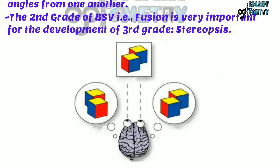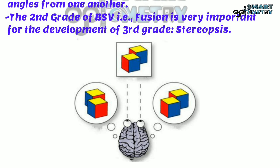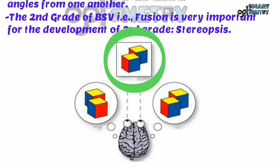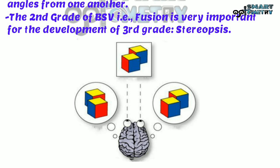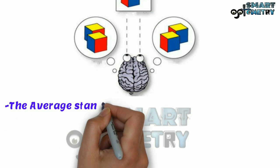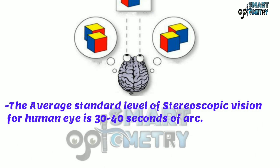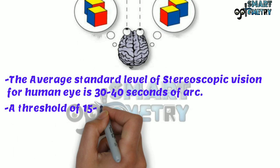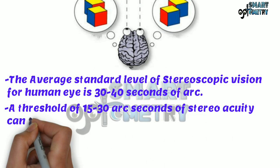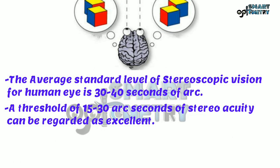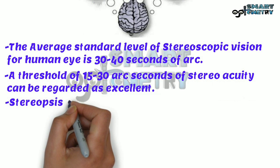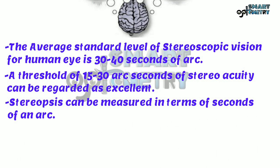Here in the picture, you can see a pair of cubes viewed at slightly different angles by both eyes. The complete picture shows a pair of cubes viewed together by both eyes with the perception of depth present. The average standard level of stereoscopic vision for the human eye is 30–40 seconds of arc, and a threshold of 15–30 arc seconds of stereoacuity can be regarded as excellent. Stereopsis can be measured in terms of seconds of arc.